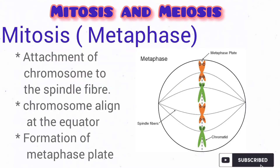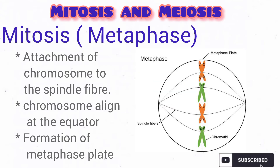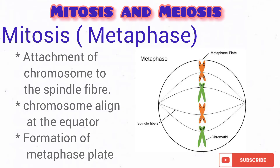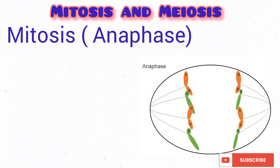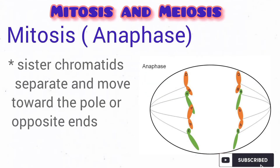The spindle fibres attach to the chromosomes at the metaphase stage. The chromosomes are aligned at the equator, or at the centre of the cell, and there is formation of the metaphase plate — an imaginary line dividing the cell into two hemispheres. In anaphase, the sister chromatids separate to form separate chromosomes and move towards opposite ends. Anaphase is the shortest phase of mitosis, while prophase is the longest.